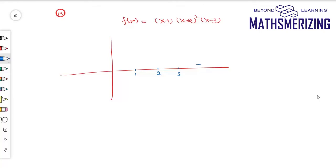The sign of the rightmost is plus and then it will be minus. Now at 2, because it is an even power, the sign does not change. So it will be negative and then it will be plus. In this case, because it is plus, so this graph will start from plus infinity, it will pass through 1.